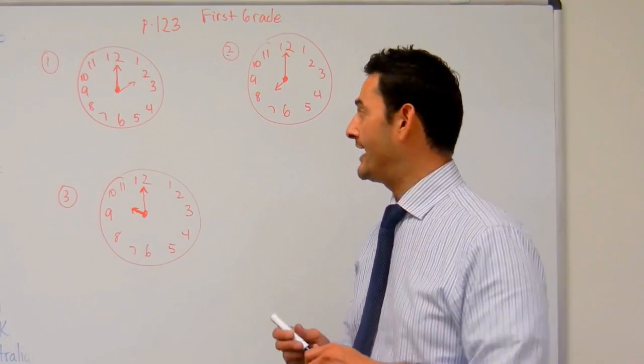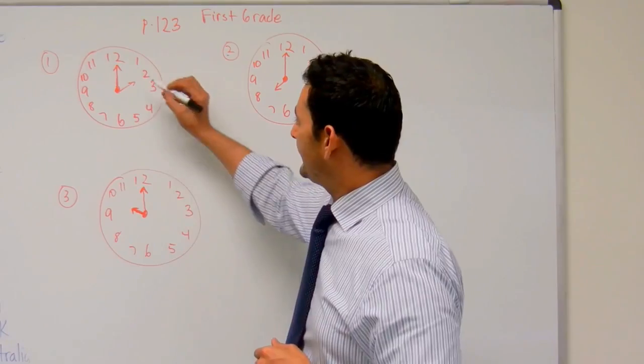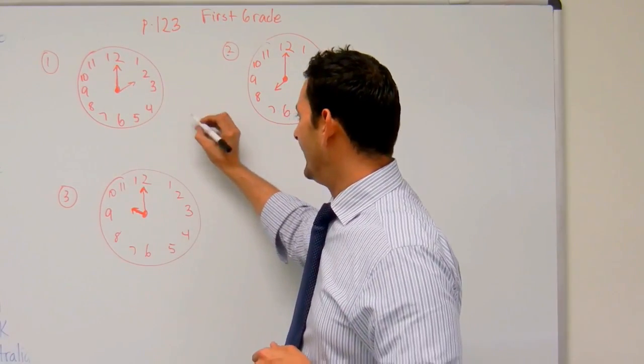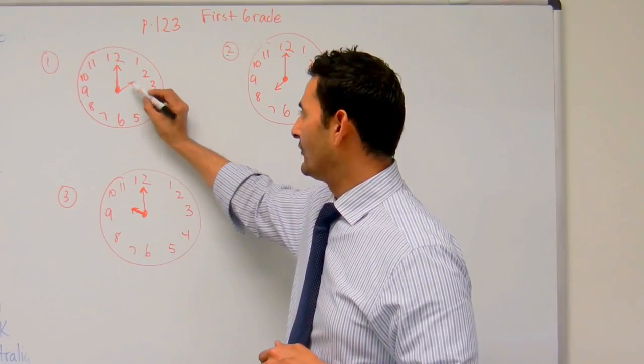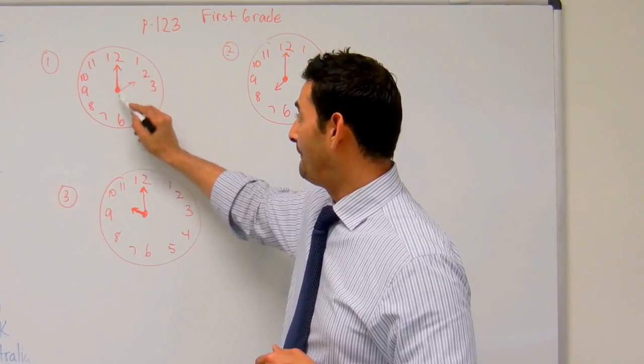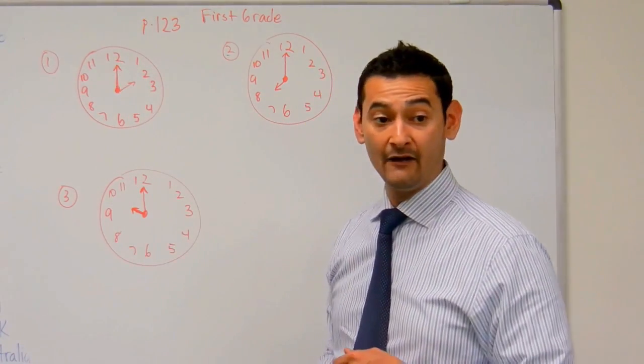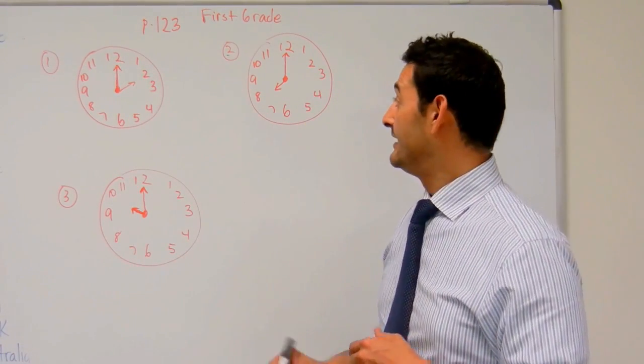So there's a couple things I want you to keep track of. Whenever you see the small one, that means that's going to be the hour. When the big hand is pointing to the 12, that means it's going to be o'clock.